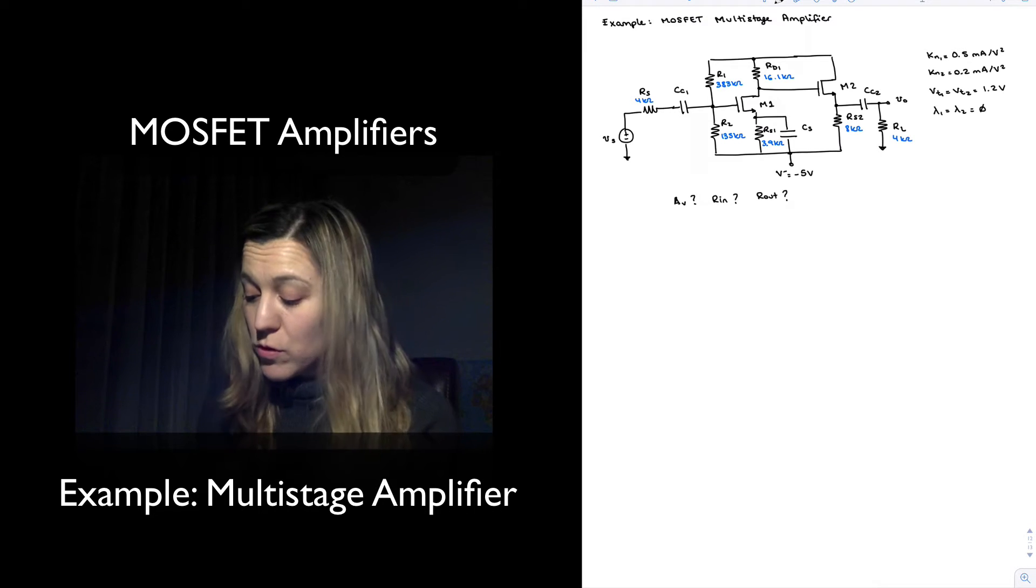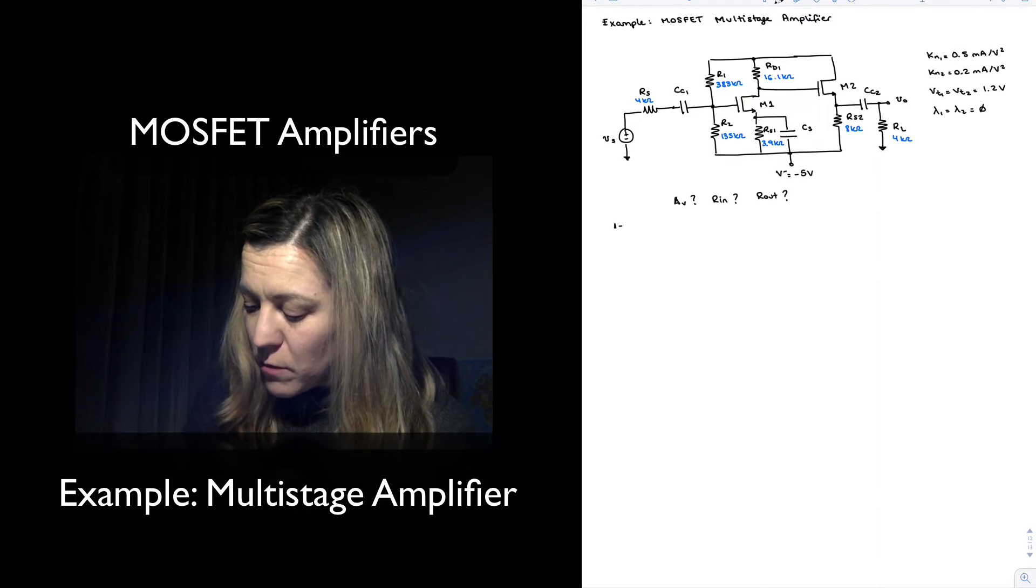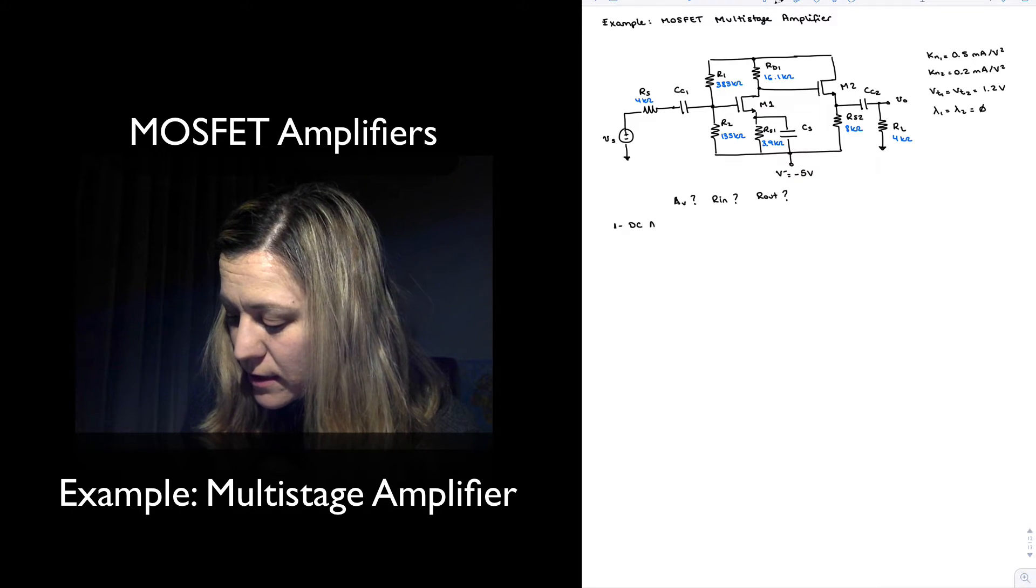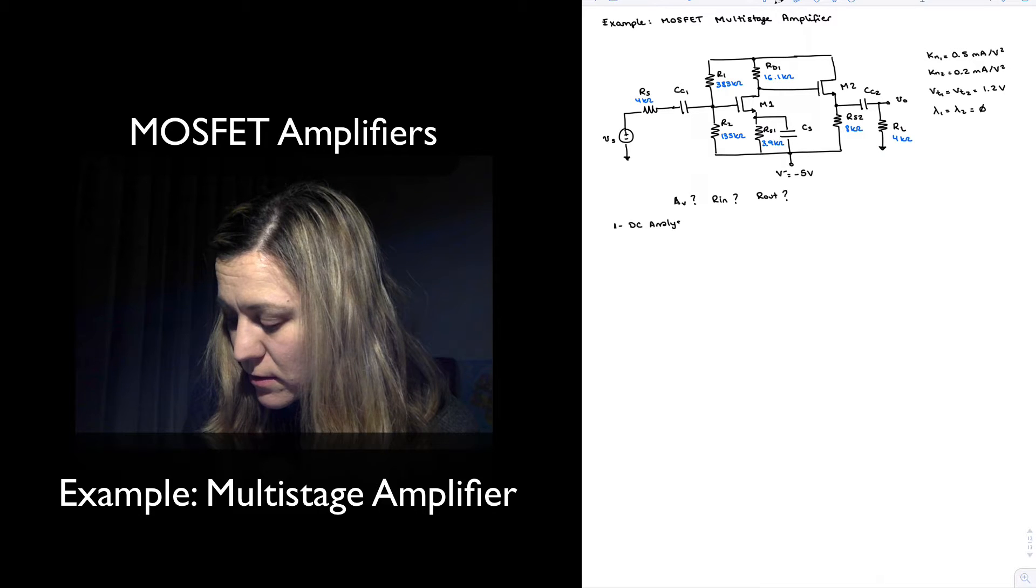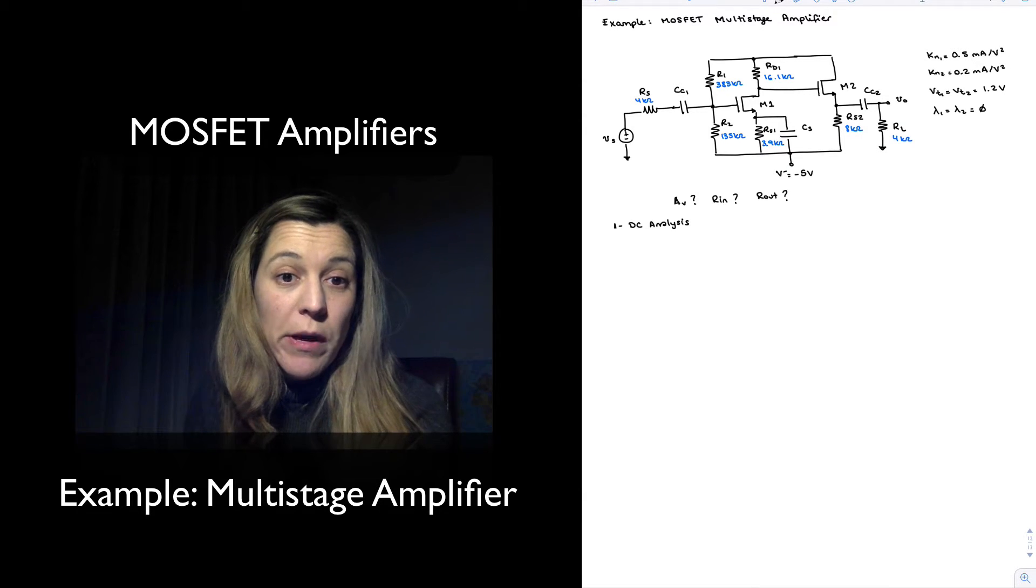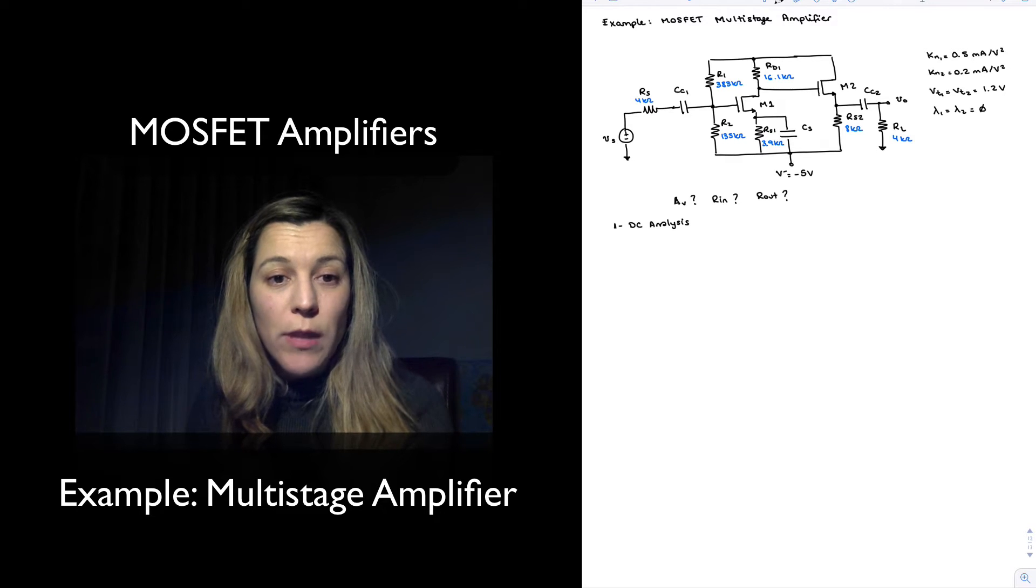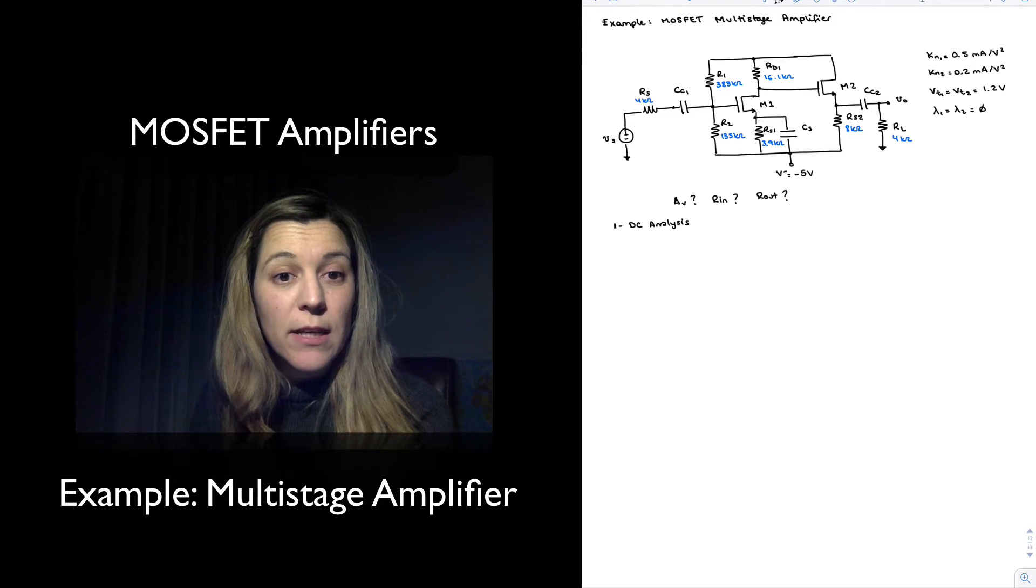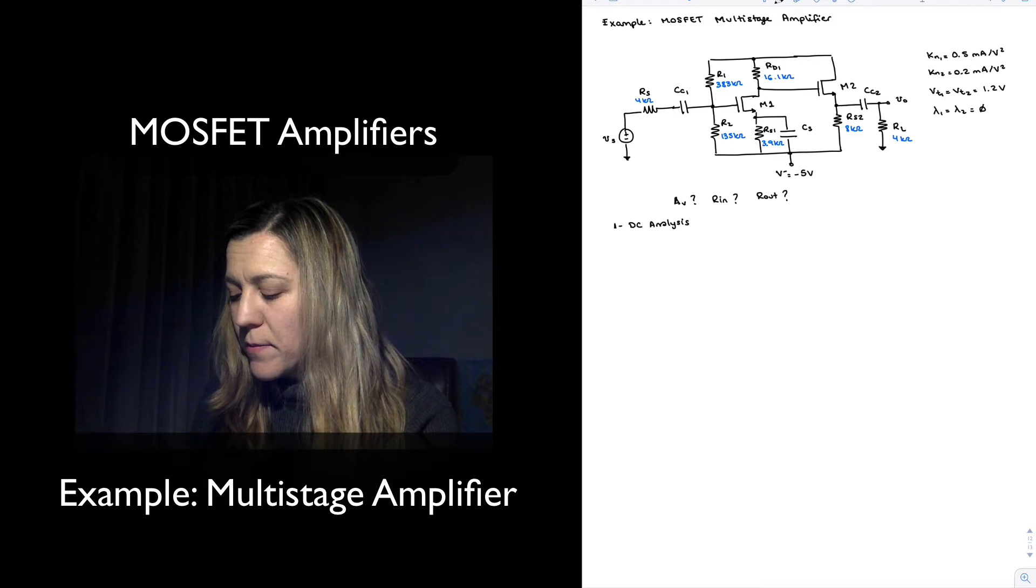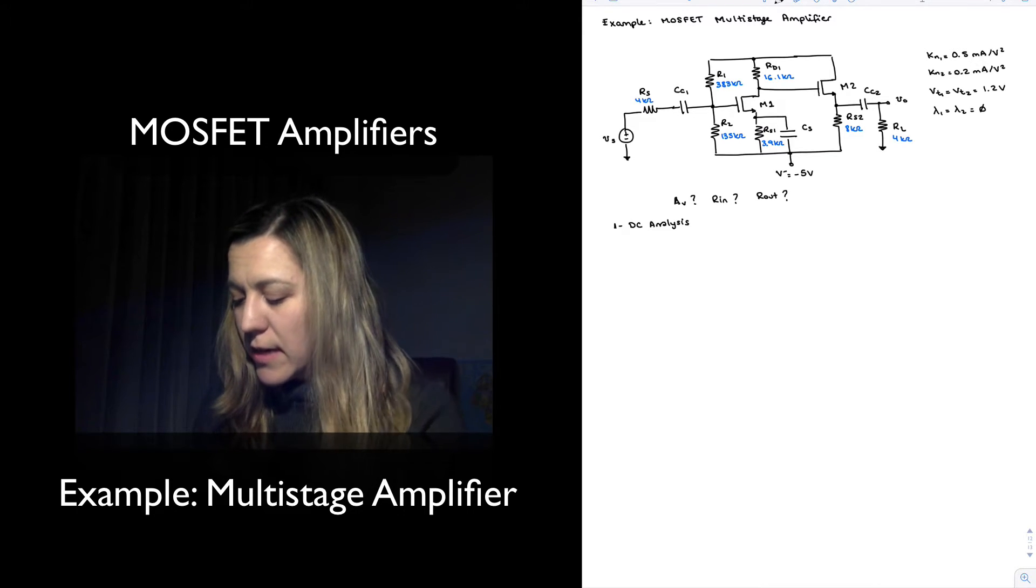We're going to start our analysis by finding the bias point, so we're going to do our DC analysis. Our bias current is going to allow us to calculate the transconductance, which we're going to need for further analysis.